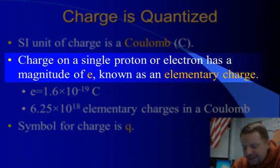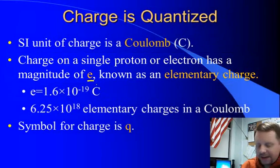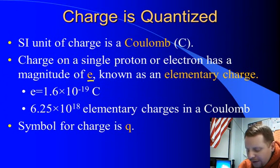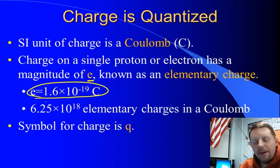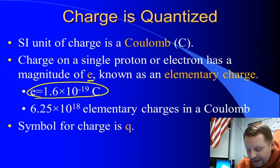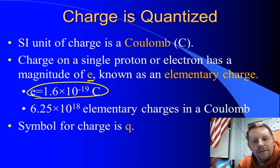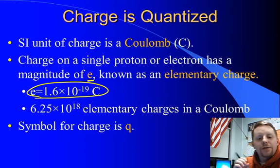Now the charge on a single proton or electron has a magnitude of e, lower case e. We call that an elementary charge. The value for an elementary charge is 1.6 times 10 to the minus 19 coulombs. That's the smallest possible charge we can have on an electron or a proton. It doesn't get any smaller than that. You can't have half an elementary charge. You can have one elementary charge, you can have two, you can have three. You can't have two and a half. It has to come in discrete amounts of e.